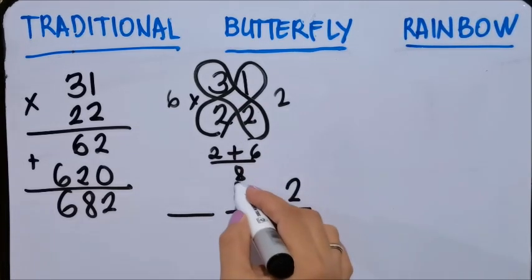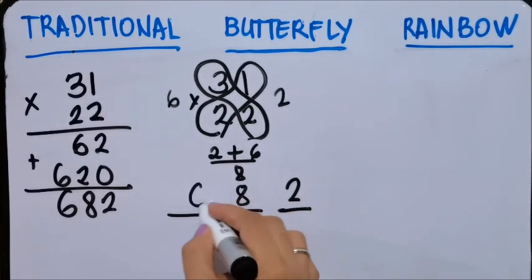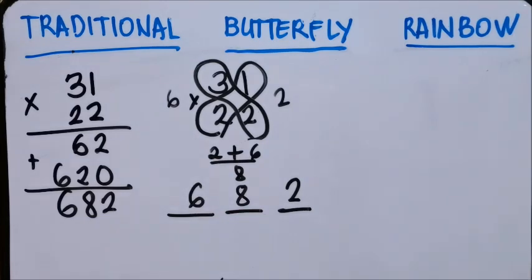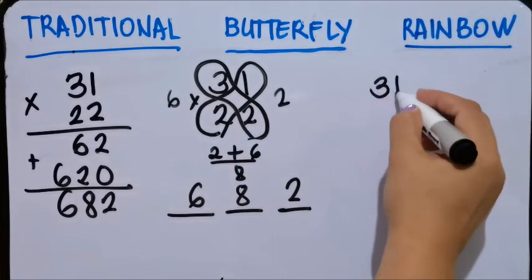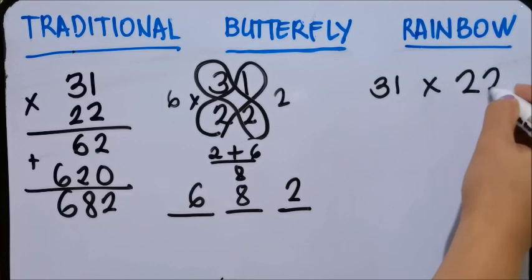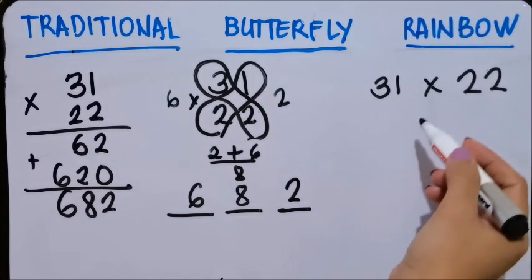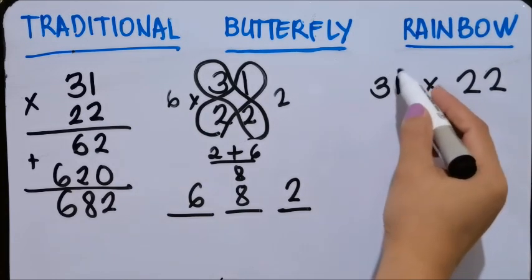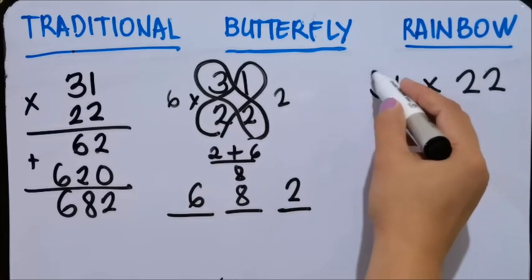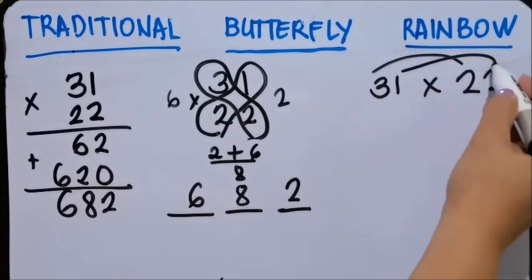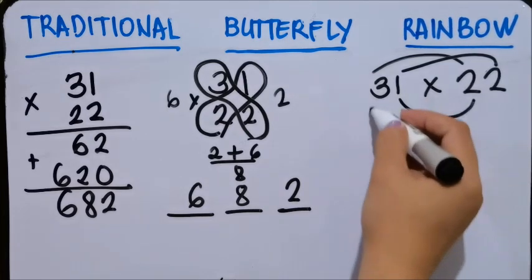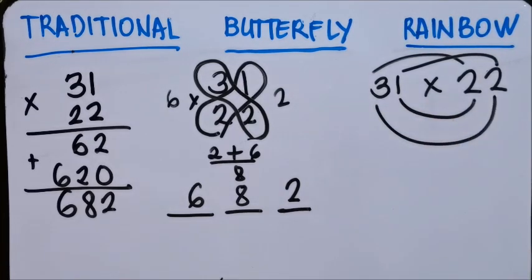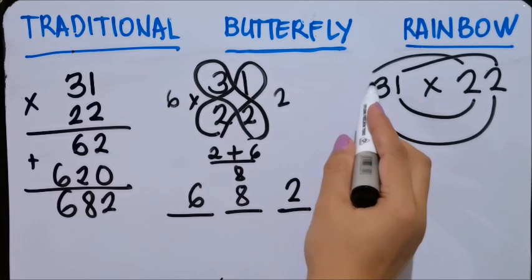Putting it all together, 682. Next is the rainbow technique. Rainbow technique is 31 times 22. From here, multiply the first to first, second to second, and then second to first and first to second.